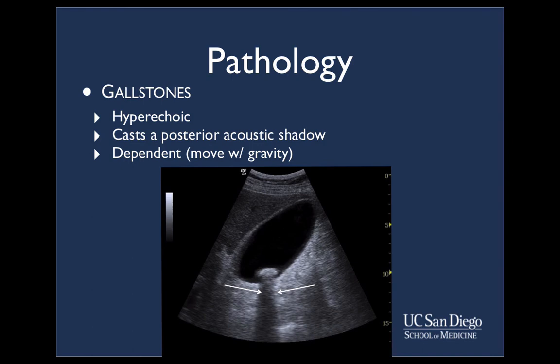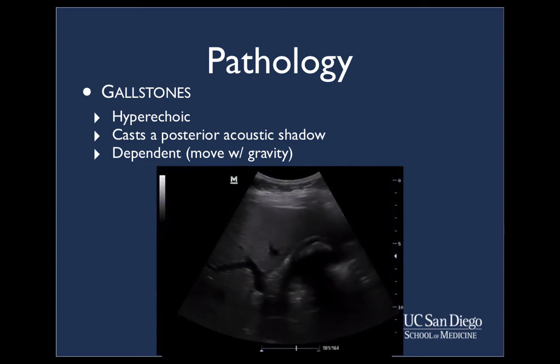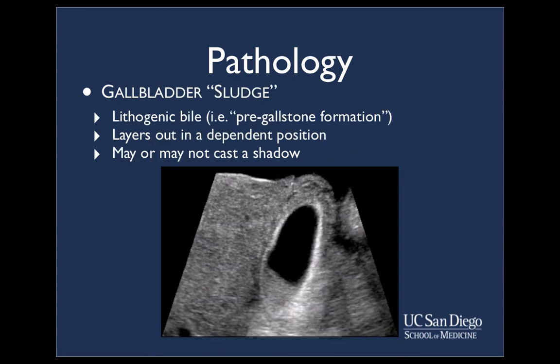Here is an example of a gallstone. Gallstones appear as hyperechoic structures within the gallbladder which cast a posterior acoustic shadow. In this video clip, a very large stone is present, occupying most of the gallbladder and casting a large shadow. Here is an example of lithogenic bile in the gallbladder — commonly referred to as gallbladder sludge — which has not fully formed into a gallstone and tends to layer out in a dependent fashion due to gravity. Sludge may or may not cast a shadow; however, sludge, similar to gallstones, can still result in biliary tree blockage or cholecystitis.